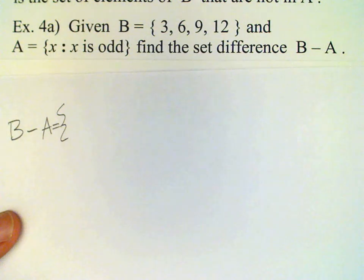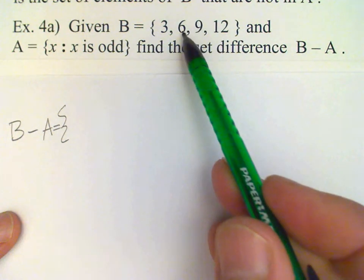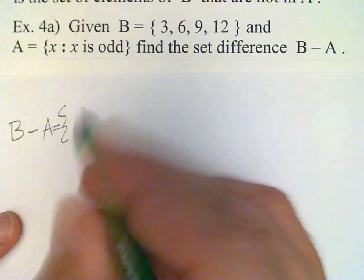So then B minus A will be the set of numbers in B which are not odd. And that would be 6 and 12, wouldn't it?